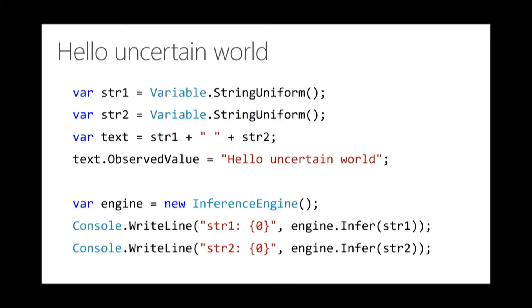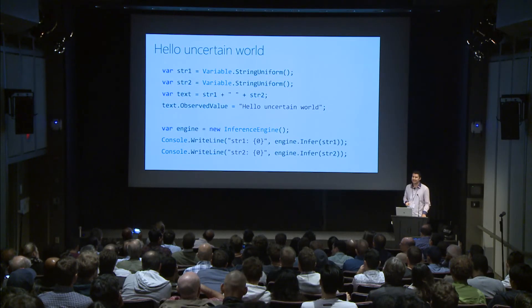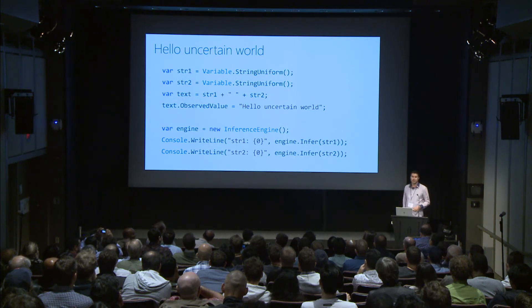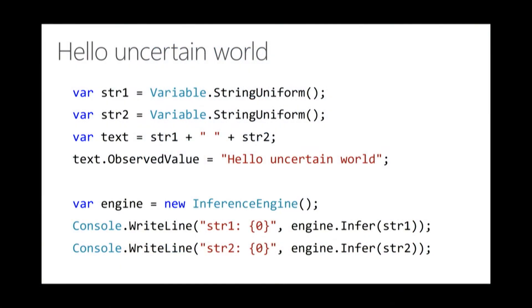I just want to show you what a Hello Uncertain World program looks like. We have two uniform distributions over strings. We concatenate them with a space in the middle and say the result should be 'Hello Uncertain World.' When we infer the posterior over these two strings, the posterior over string one is 50% on 'Hello' and 50% on 'Hello Uncertain.' And therefore the posterior over string two will be 50% over 'Uncertain World' and 50% over 'World.' Something that I think we as a community should be able to write.